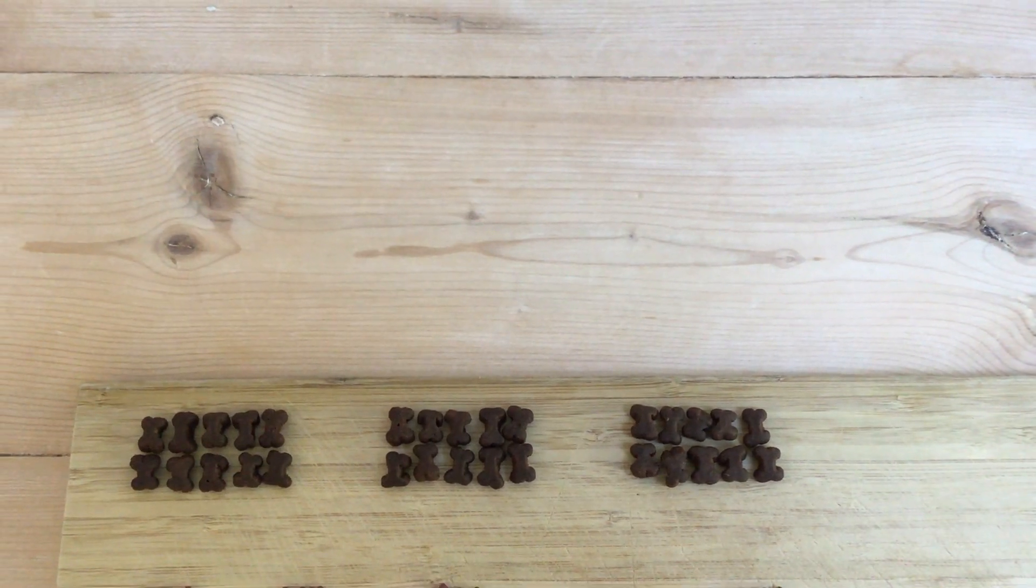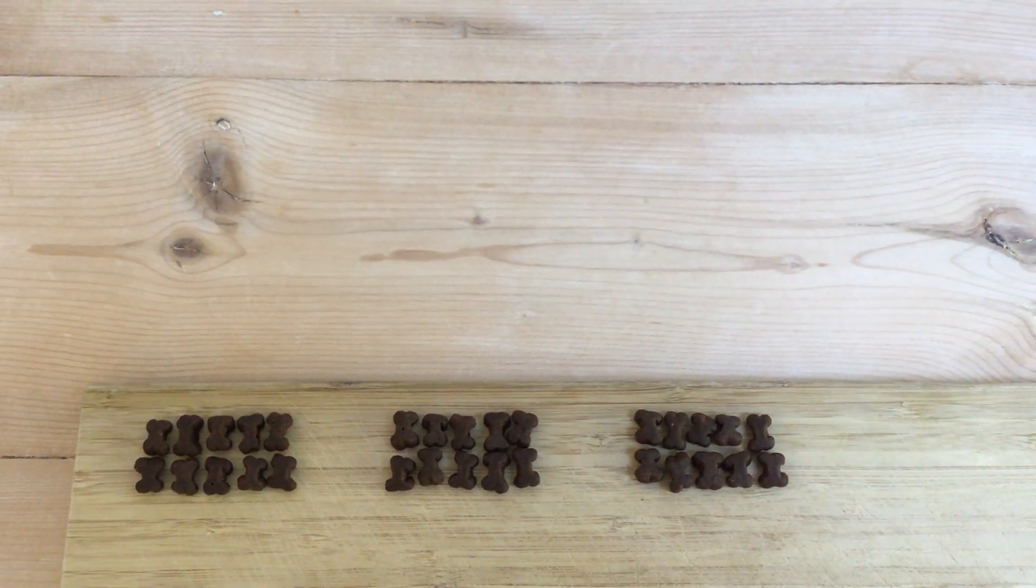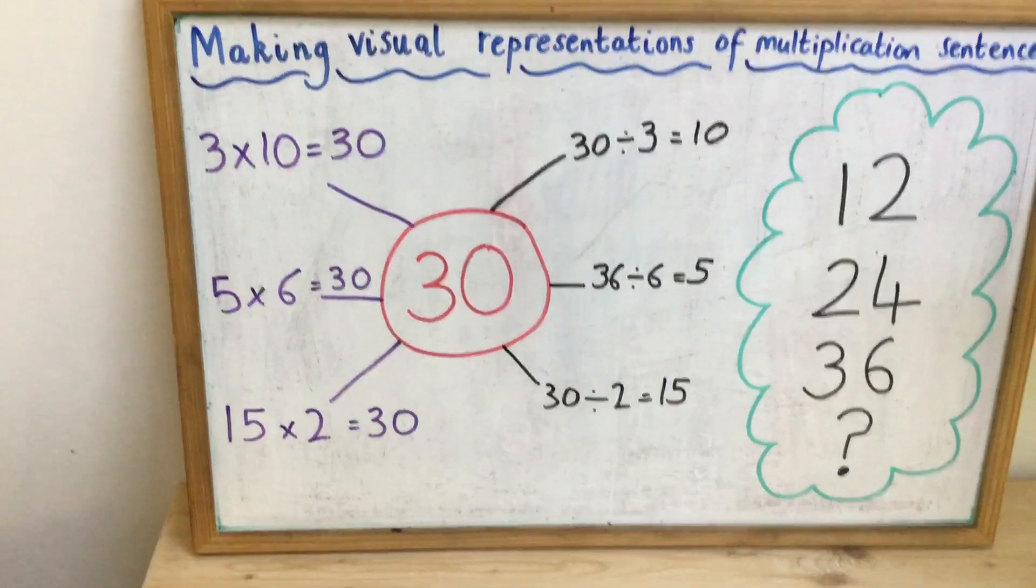So 3 sets of 10, 10, 20, 30 equals 30. Now if I go back to my board.